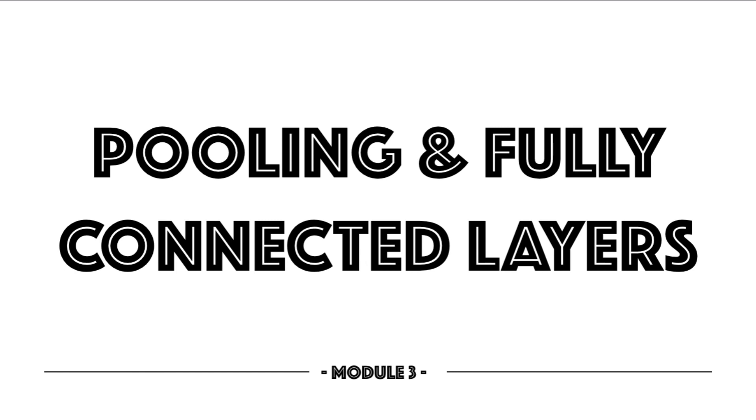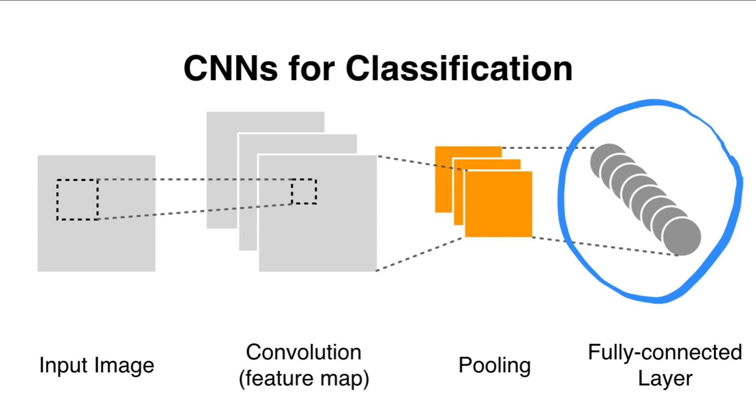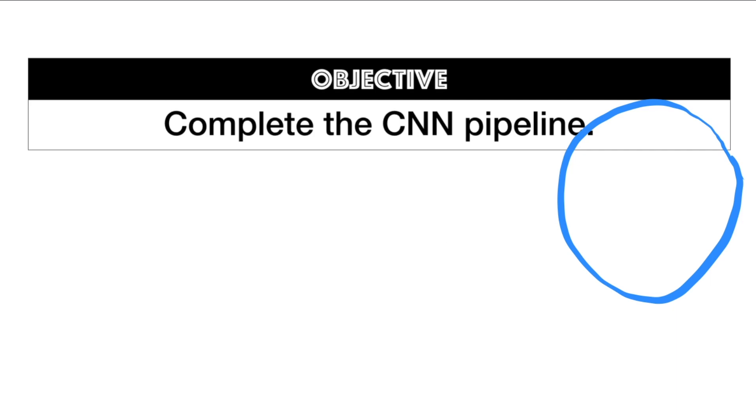That's the reason why we are going to define in this video the final layer of a CNN which is called a fully connected layer. Before we start, just a recap on the usual CNN architecture. We have the input image, the convolutional layer, and in this specific video we're going to focus on pooling first and then on the fully connected layer which is highlighted here.